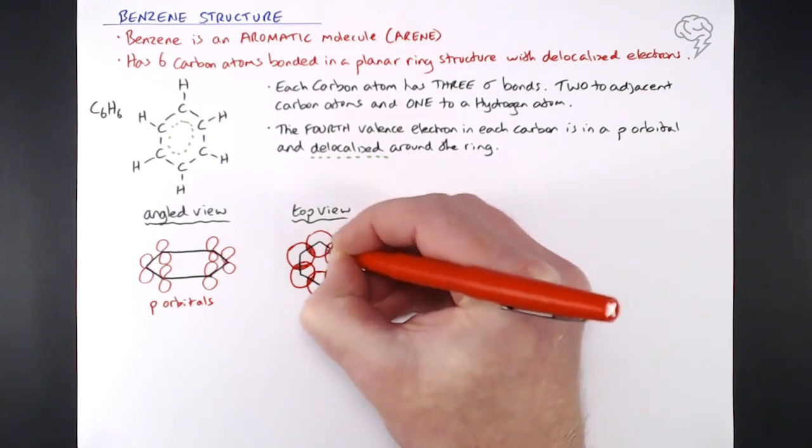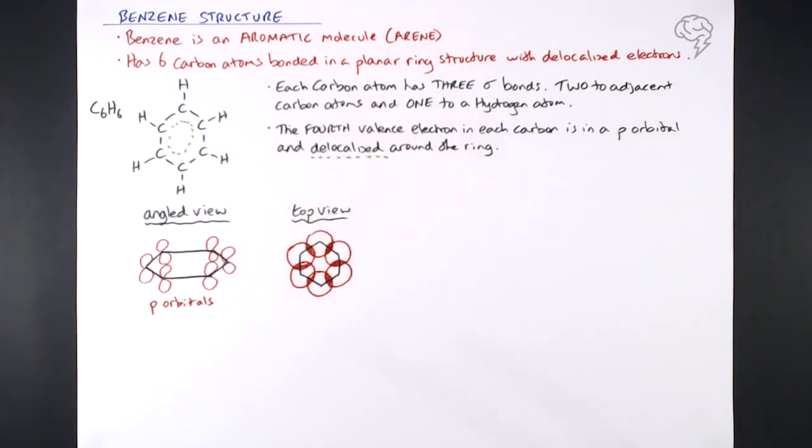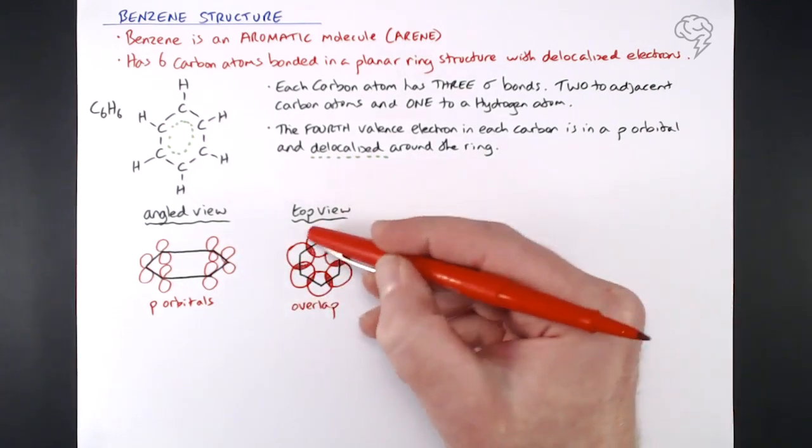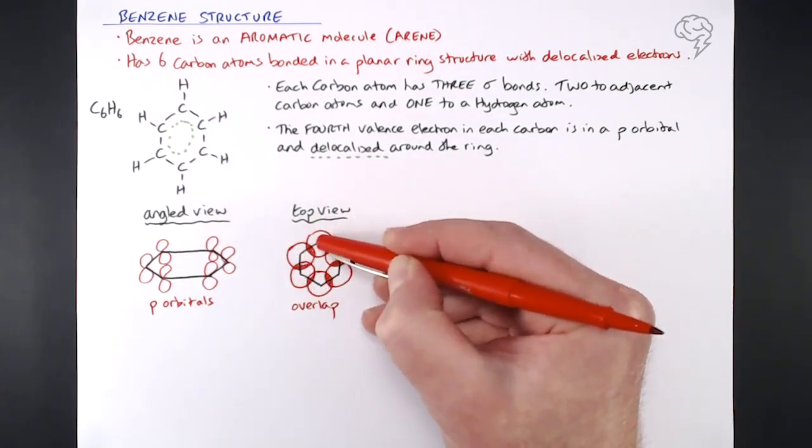Now I'm highlighting in red here exactly where they overlap. So all these p orbitals on each of the carbon atoms, all these vertical p orbitals, they overlap.